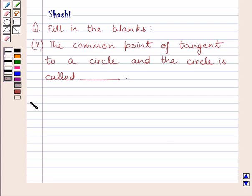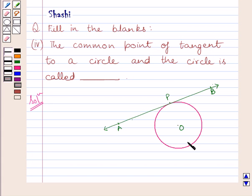Let us now start with the solution. First of all, let us draw a circle with center O and AB is a tangent to the circle and it touches the circle at point P.